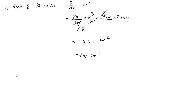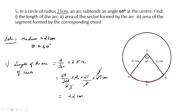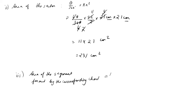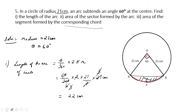The third value to find is the area of the segment formed by the corresponding chord. Area of segment = area of sector − area of triangle AOB. Now we need to understand triangle AOB: OA = OB = 21 cm, and the angle at O is 60°.